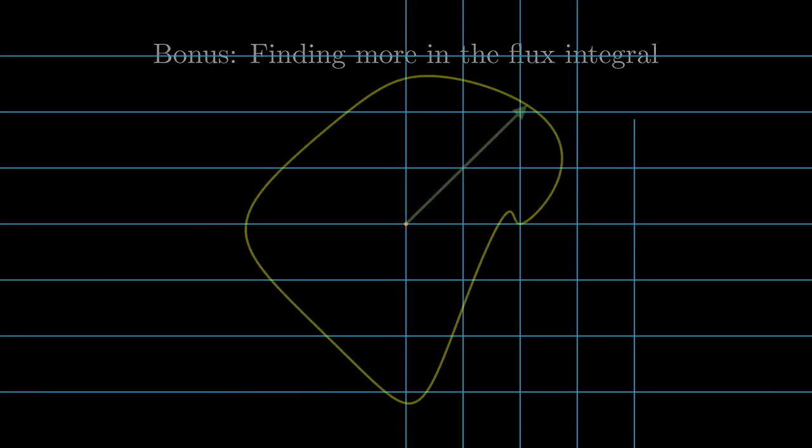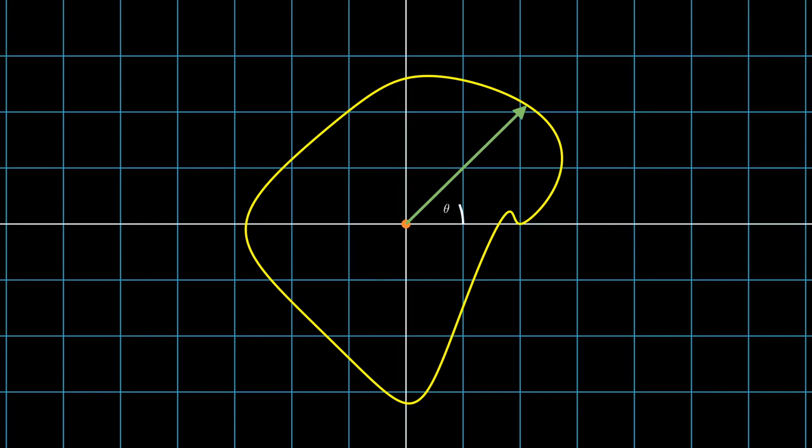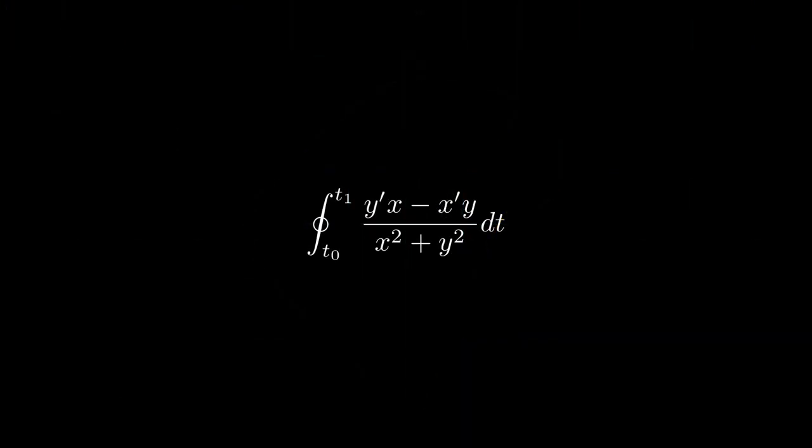Now that Gauss's law is proven, I would like to show something else I found about the flux integral. When I think of the 2D plane and an angle from the positive x-axis, I think of complex numbers. Also, I noticed that the numerator of the integrand has an x and y term subtracted by another x and y term. This led me to think that this numerator could be the real or imaginary part of complex multiplication.